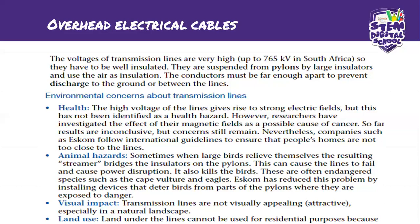There are environmental concerns about transmission lines. Number one, there can be a health risk. The high voltage of the lines gives rise to strong electric fields, but this has not been identified as a health hazard so far. However, researchers have investigated the effect of their magnetic field as a possible cause of cancer. Most transmission lines are in farm areas and on roads, but researchers have established that some have the potential of causing cancer. So far the results are inconclusive.